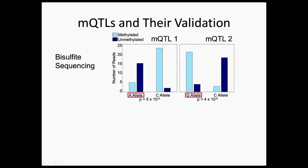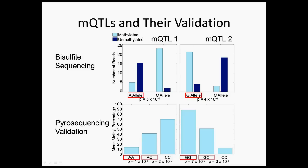For our other MQTL, associated with obesity, individuals with the G allele — the allele associated with obesity — have a CpG nearby that is usually methylated. For reads with the C allele, the one not associated with obesity, the CpG nearby is not methylated. This suggests that methylation of the CpG in this case is associated with obesity. As you can see in the charts below, the pyrosequencing validation almost perfectly matches our bisulfite sequencing results, with the center bars for heterozygous individuals. This suggests that these MQTLs associated with disease and not found in other studies are real and not just an artifact of our experiment.